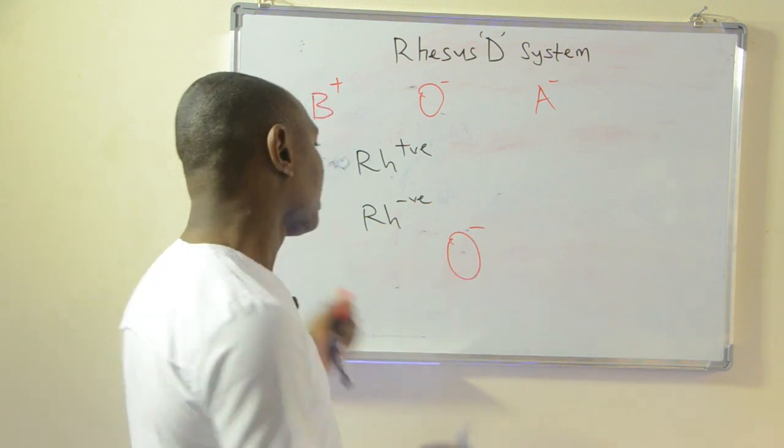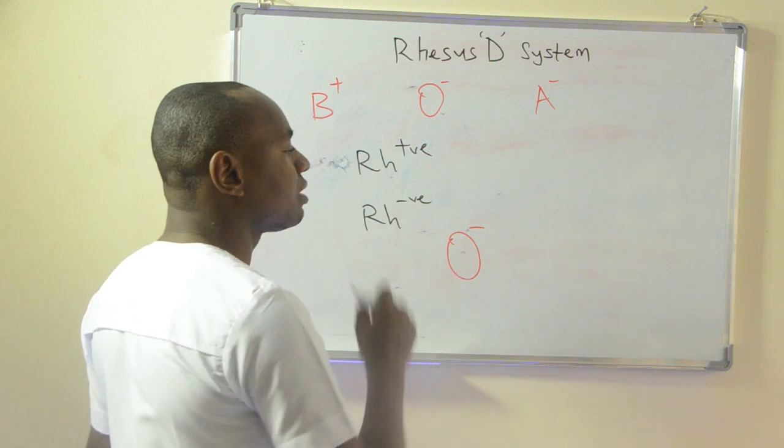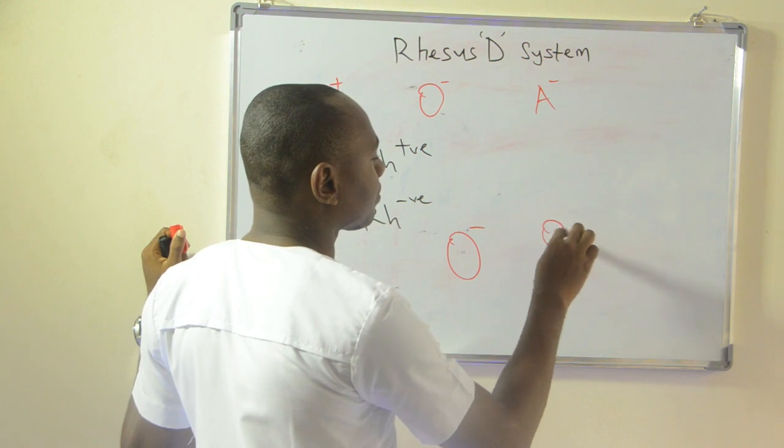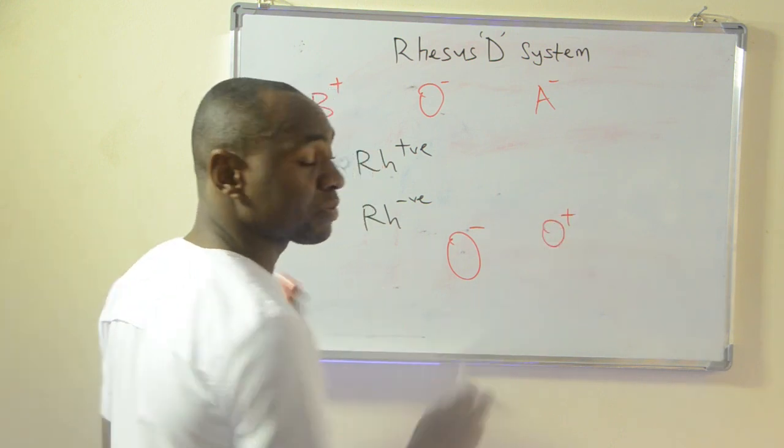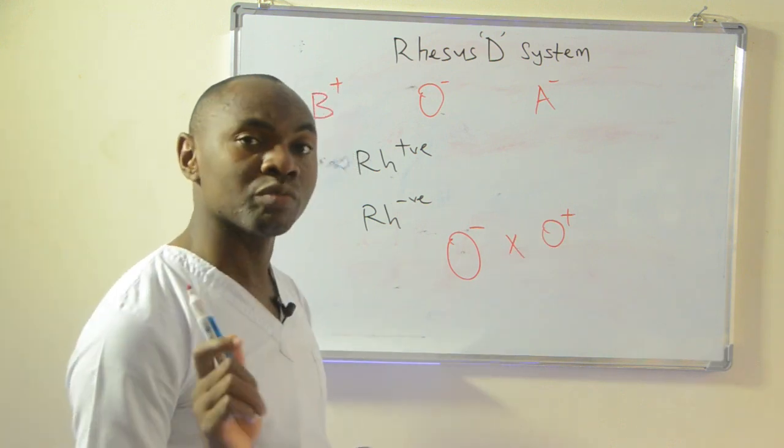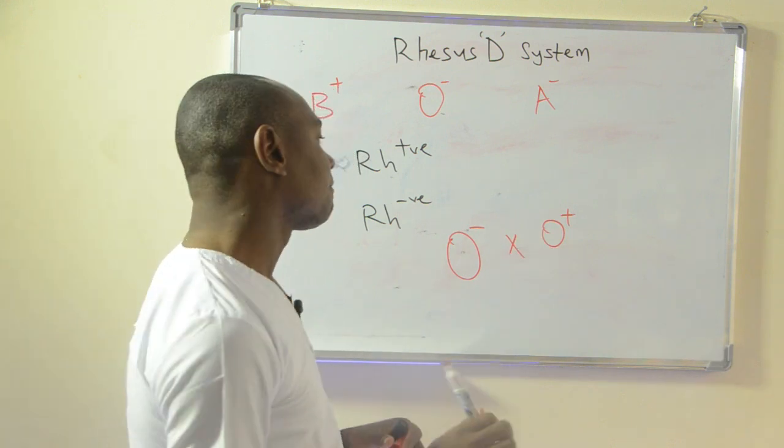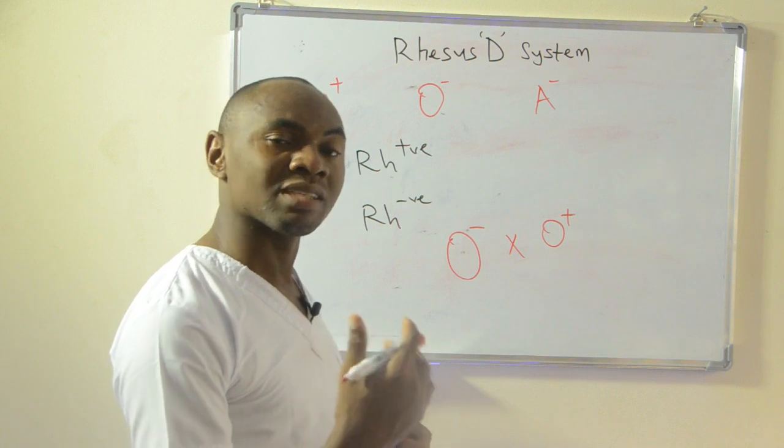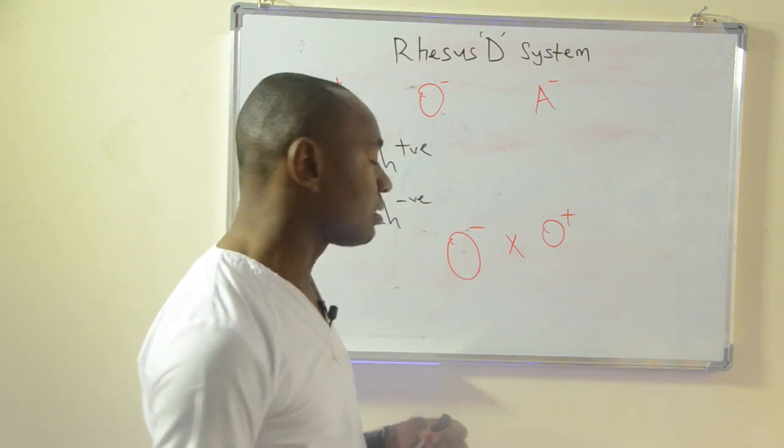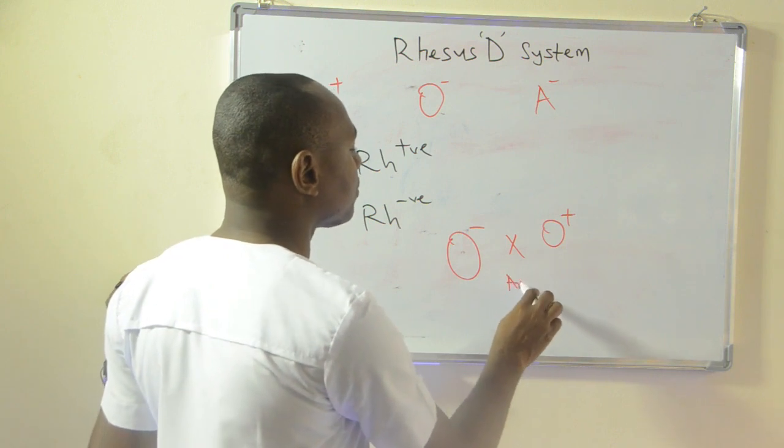If the woman is O negative and the child is O positive, Rhesus positive, there is going to be a conflict. And while the woman has a first pregnancy and delivers, antibodies will be produced in the body of the woman against the O positive child, but nothing will happen to the first child.